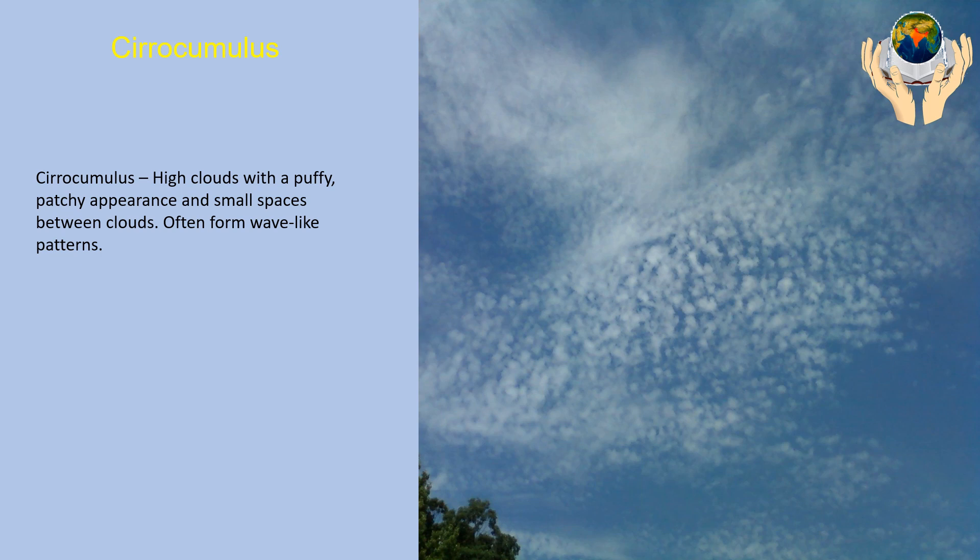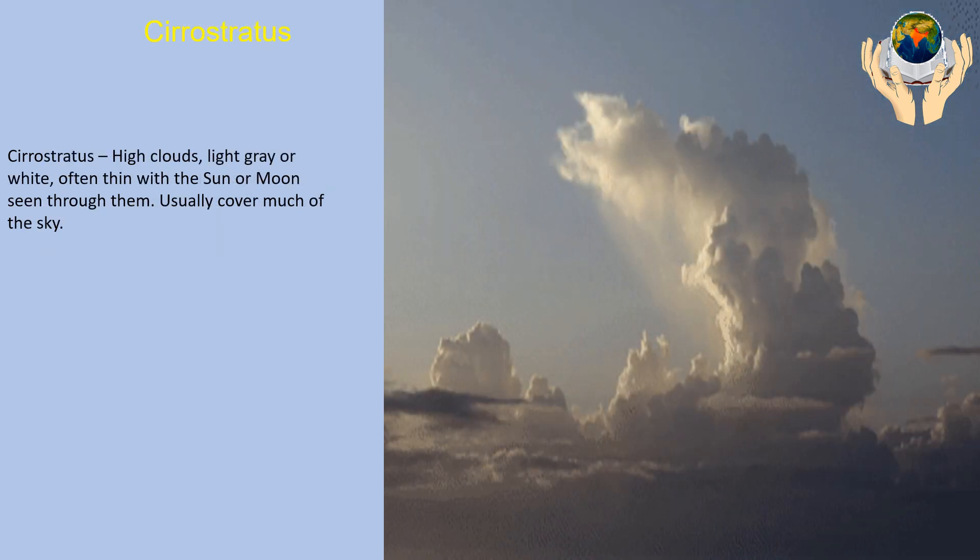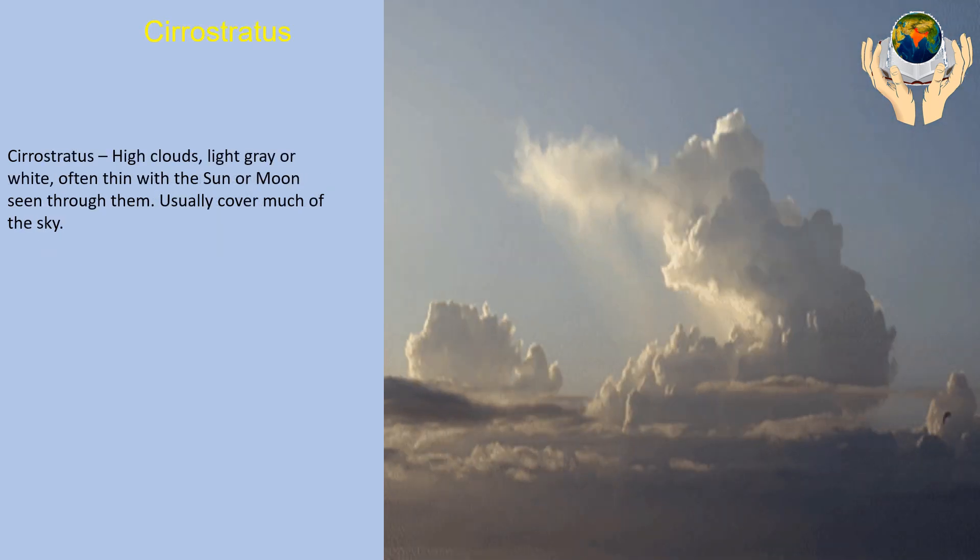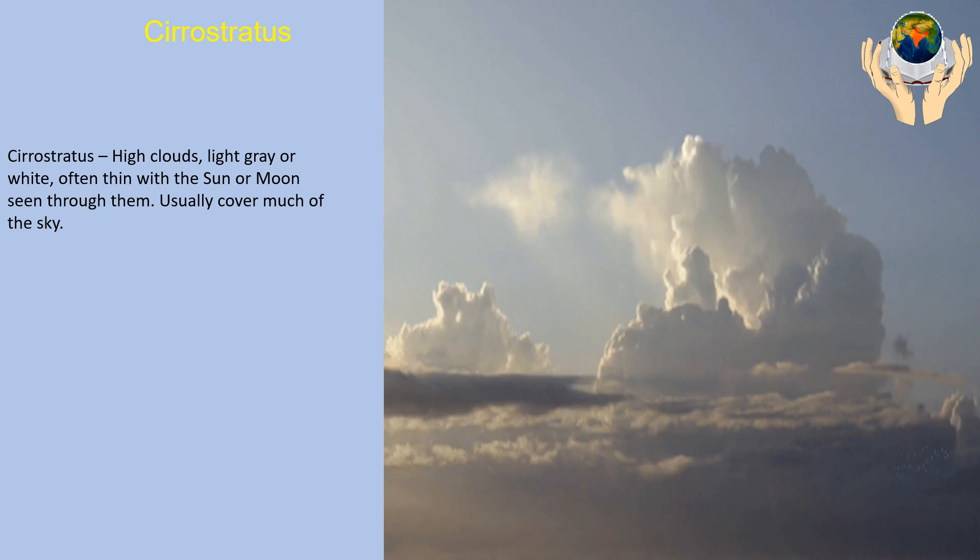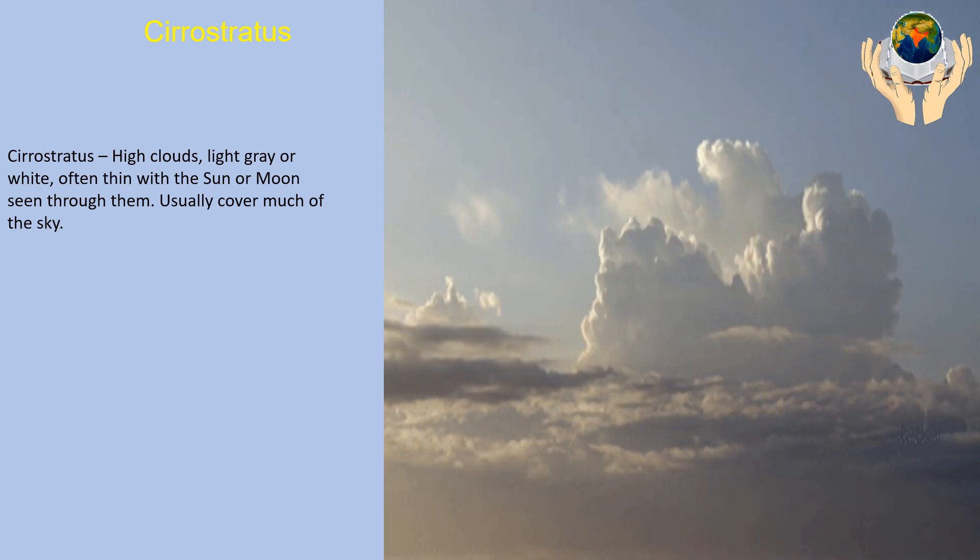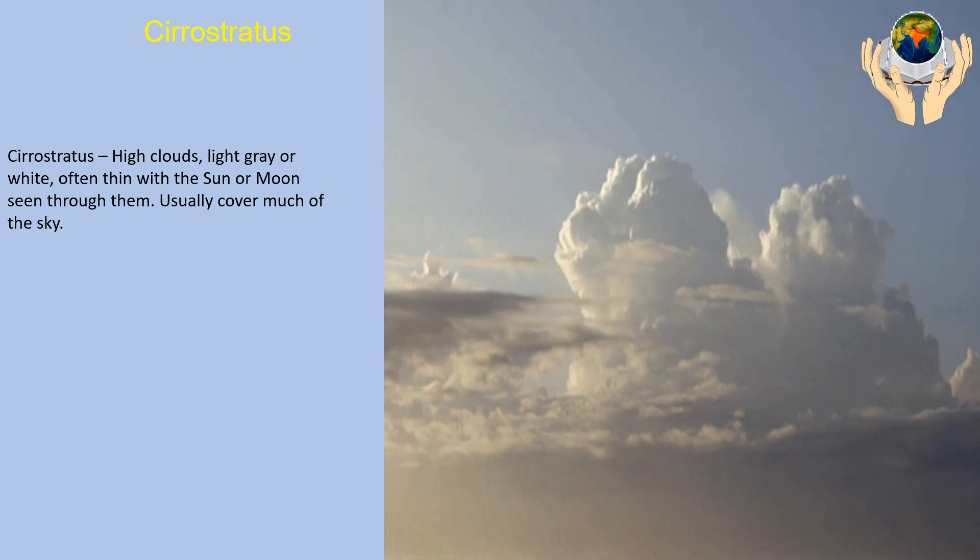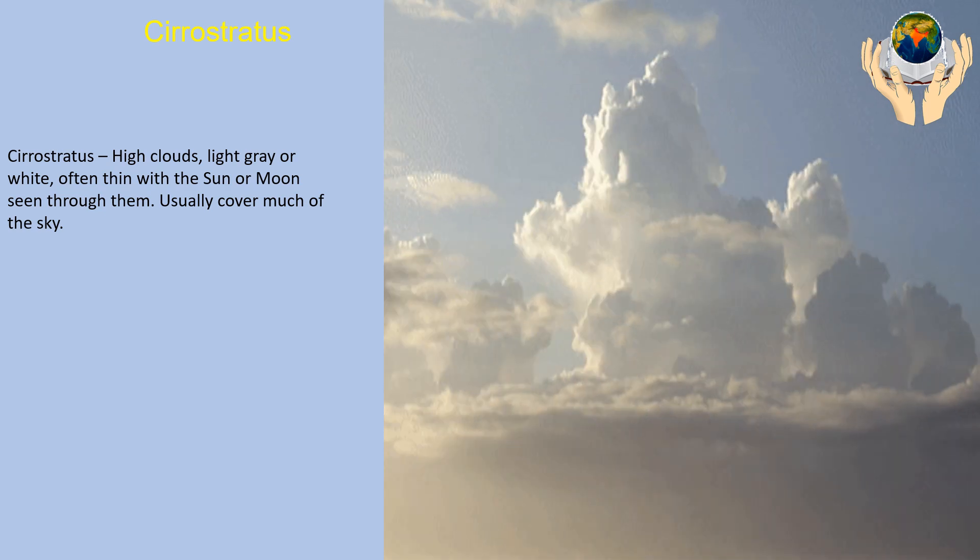Cirrostratus. Cirrostratus is the high clouds, light gray or white, often thin with the sun or moon seen through them, usually covering much of the sky.